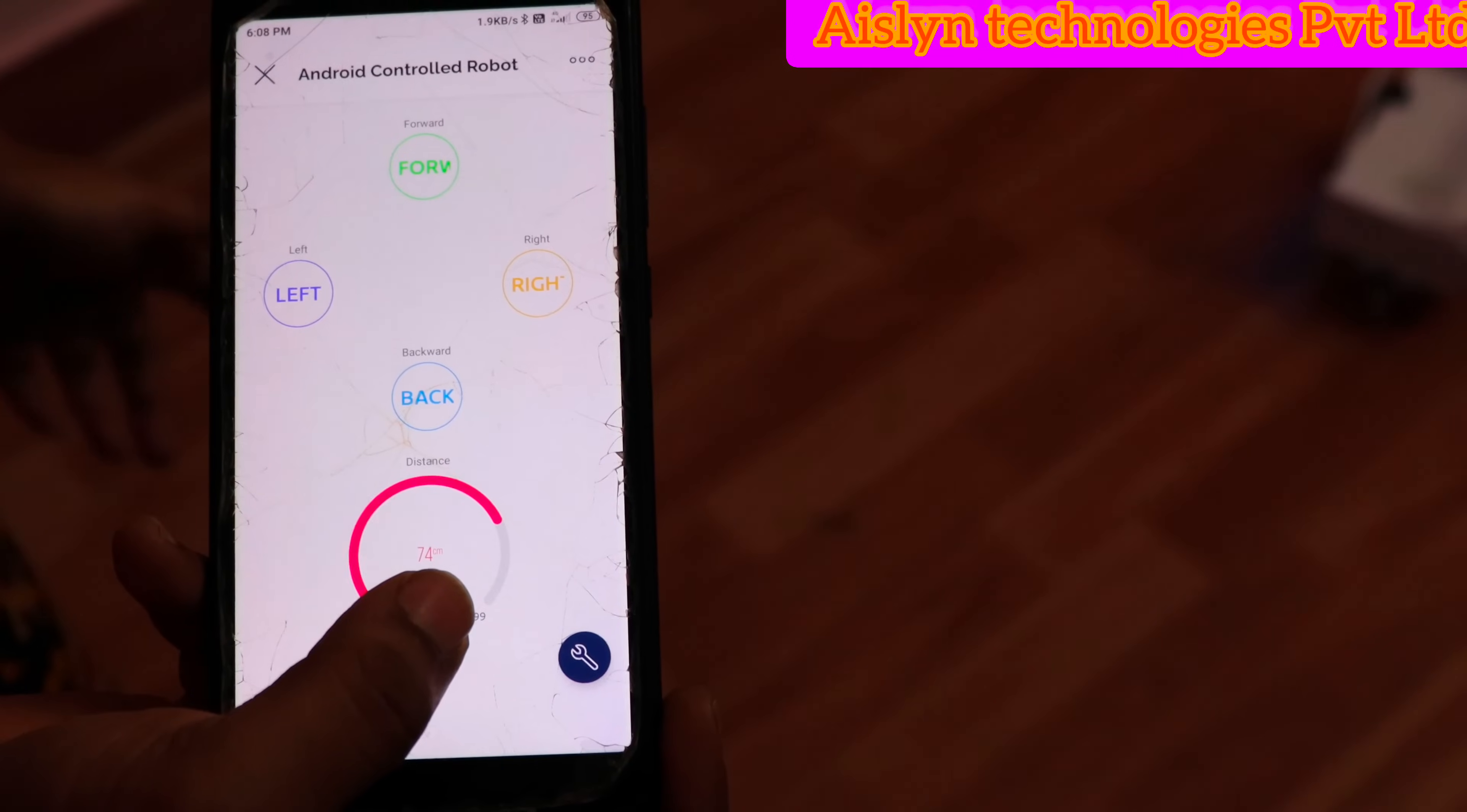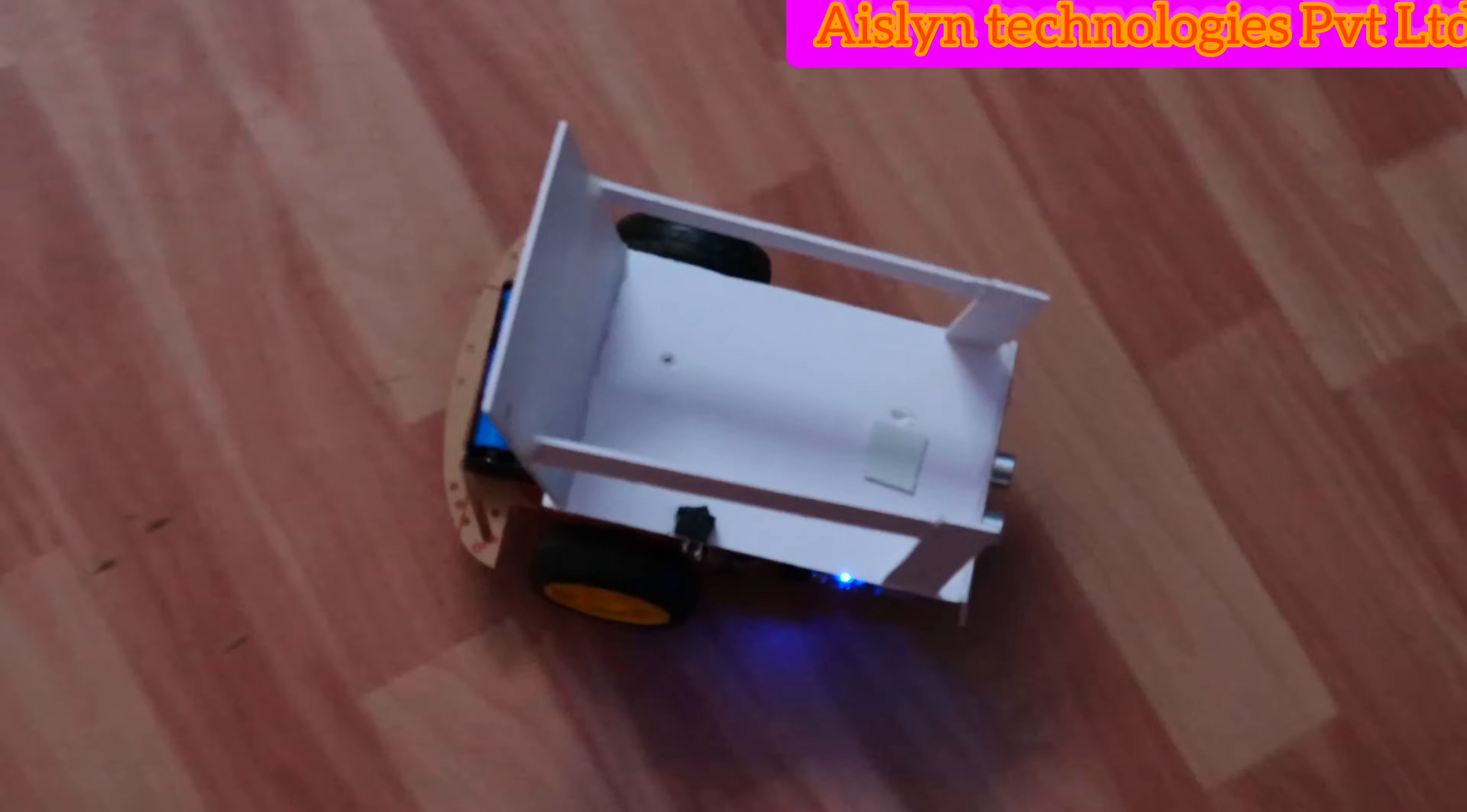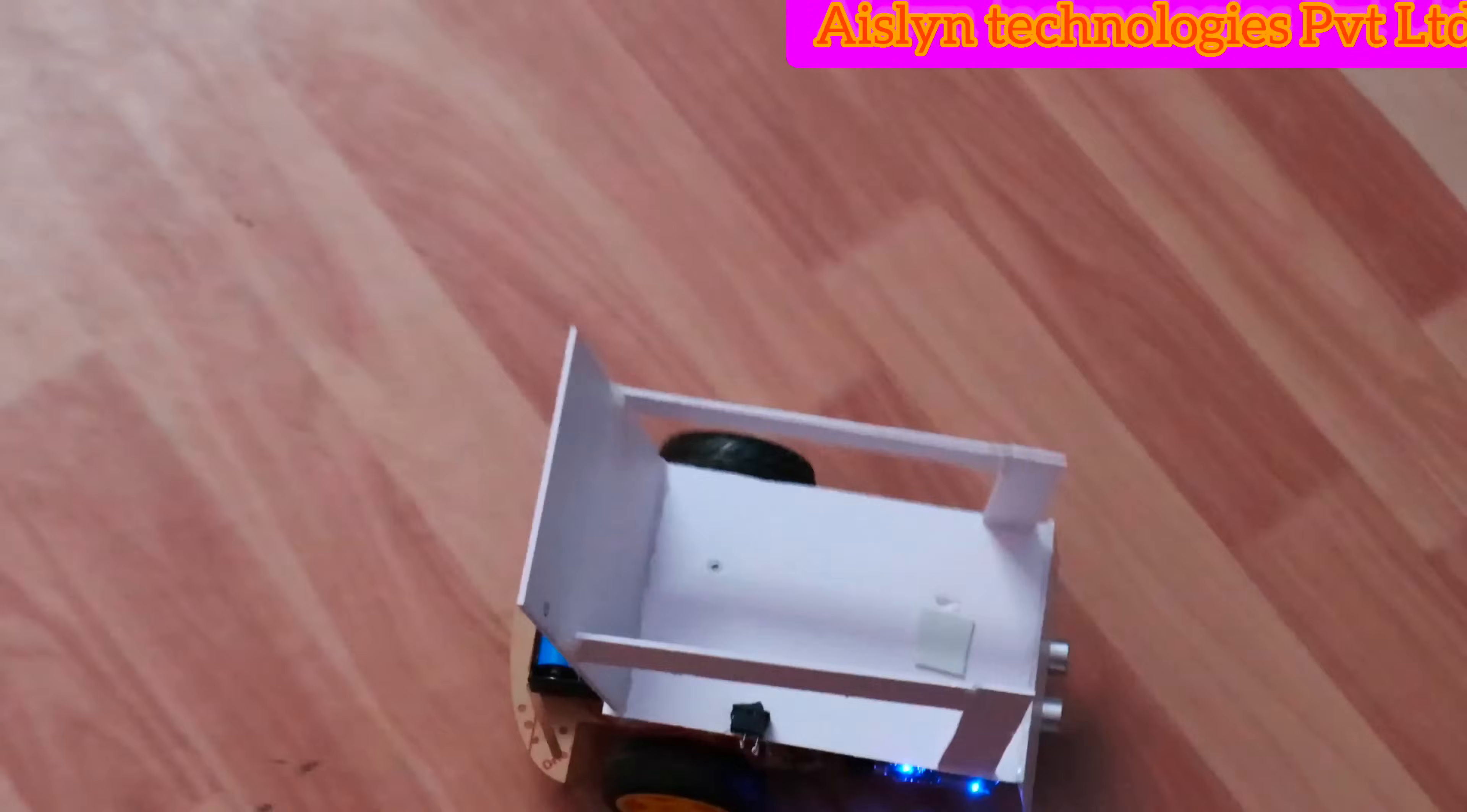Now we can see practically how we can operate and how robot it will move. I am clicking forward. See, robot is moving forward. If you click back, it is coming to back.